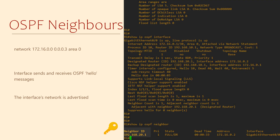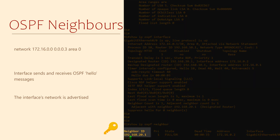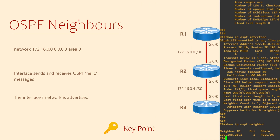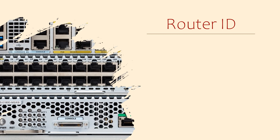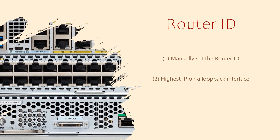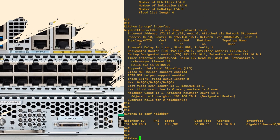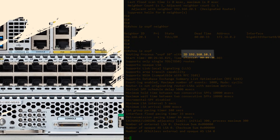Each router needs a unique way to identify itself to other routers — that's what the router ID does. Each OSPF router has a router ID, and it must be unique. It looks like an IP address — it's a 32-bit number formatted like an IP to make things easier. There are three ways a router ID can be set. The first is if we set it ourselves. If we haven't set it, the router selects the highest IP address on a loopback interface. If there's no loopback, the router selects the highest IP of any active interface. To see the router ID, we use the command show ip ospf — the ID appears on the first line.